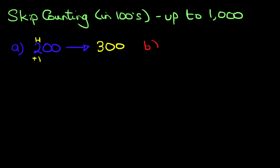Let's have a look at the next one. This time we've got 500. What number comes after 500 if we are counting in 100s? Well, there's the 100. We add 1 to it. The 500 becomes 600. I told you it was easy. It's very easy.